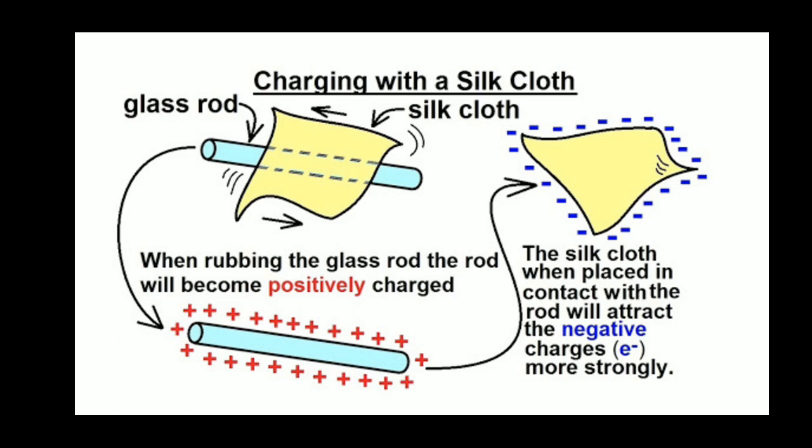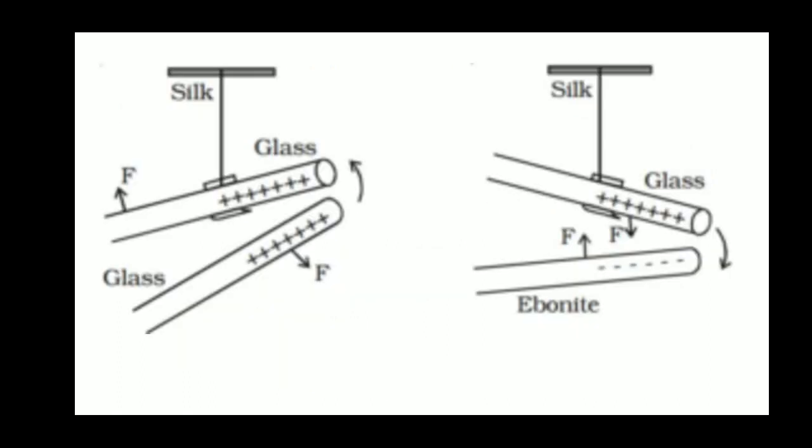Movement of electron only will take place. The glass rod is positively charged means the glass rod has lost some electrons and the silk has gained some electrons. I have taken two glass rods — when glass is rubbed over silk, the glass becomes positively charged. I have suspended one such glass rod with a silk thread and bring another positively charged glass rod nearby.